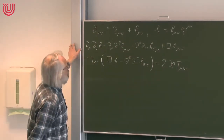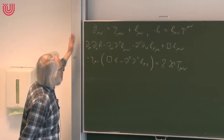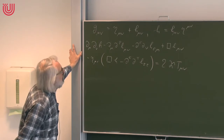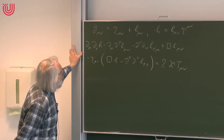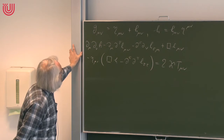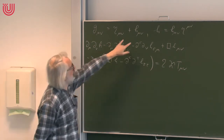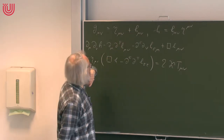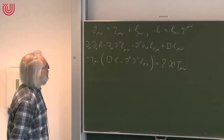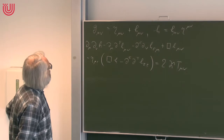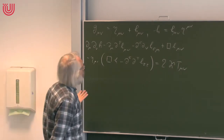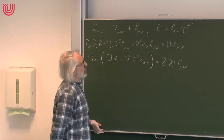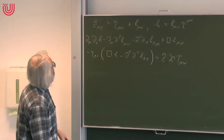It looks pretty ugly — six terms on the left-hand side. Fortunately, we can simplify this expression considerably. We have two freedoms and we will make use of both of them. First, we can introduce a new variable instead of h. We can substitute something else for h, which will simplify the terms a little bit. And then we are also free to make coordinate transformations which preserve this form.